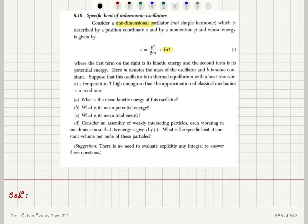Suppose that this oscillator is in thermal equilibrium with a heat reservoir at temperature T, high enough so that the approximation of classical mechanics is a good one. What is the mean kinetic energy of this oscillator?